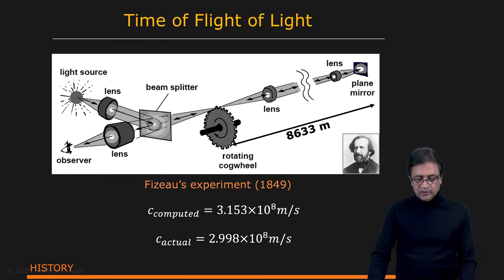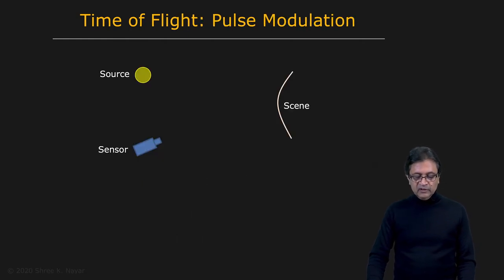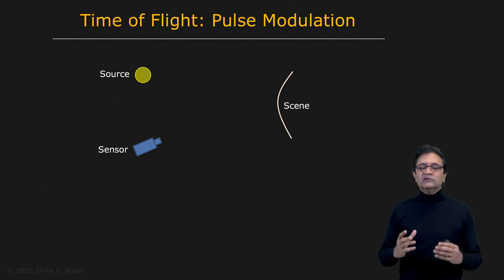This is remarkable because the actual speed of light is now known to be very precisely 2.998 × 10^8 meters per second. Think about how close those numbers are and how he was able to arrive at that number with this very simple, clever experiment. Today we know what the speed of light is through various experiments and confirmations. Now that we know that, we want to develop a technique for measuring the distance of points in the scene using the time of flight of light.